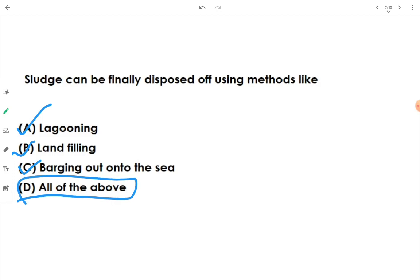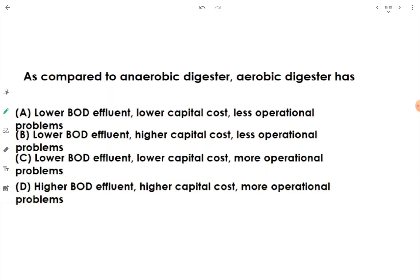Compared to an anaerobic digester, an aerobic digester has lower BOD effluent, lower capital cost, and fewer operational problems. However, power requirements for aerobic digesters are higher, and there is no methane produced as a byproduct. The capital cost of designing and constructing an aerobic digester is less, and operational troubles in anaerobic digesters are more. So option A is the answer.